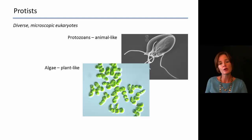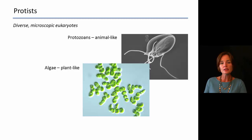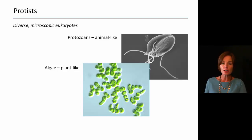We also have some protists that are more plant-like, and we tend to refer to these as algae. They are plant-like because they have cell walls typically very similar to what you find around plant cells, and they're also going to be autotrophic.